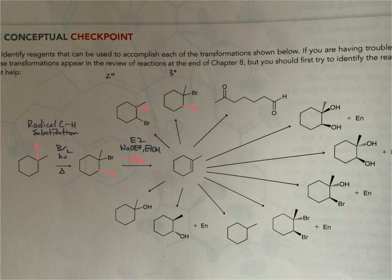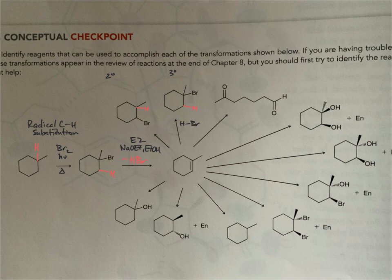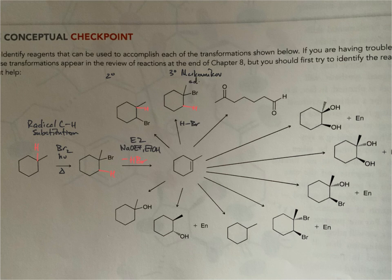The tertiary bromide is more straightforward — it follows Markovnikov addition. That's simply the addition of HBr across the alkene: hydrogen adds to this carbon, generating a tertiary carbocation that the bromide anion then attacks to give the tertiary bromide. So we label this as Markovnikov addition.